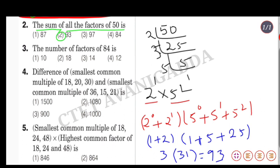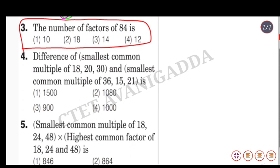The second option is the correct answer. Moving on to the next problem: find the difference between the smallest common multiple of 18, 20, 30 and the smallest common multiple of 36, 15, and 21.